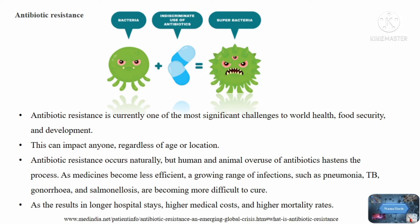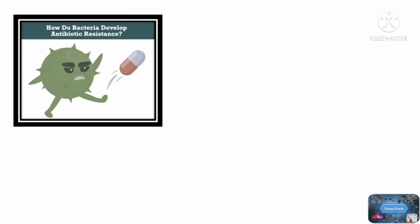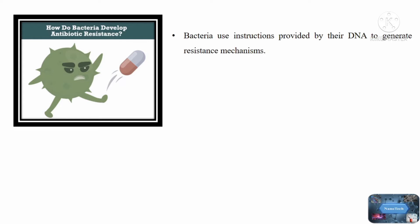How do bacteria develop antibiotic resistance? Antibiotics are medicines that attack germs. Germs, on the other hand, fight back and develop new methods to survive. Bacteria use instructions provided by their DNA to generate resistance mechanisms. Resistance genes are frequently found on plasmids, which are tiny bits of DNA that transmit genetic instructions from one germ to the next. This means that some bacteria can pass on their DNA to other bacteria, causing them to become resistant.